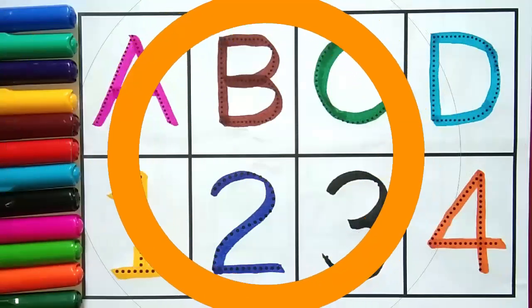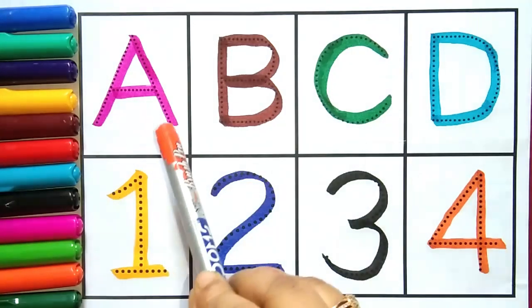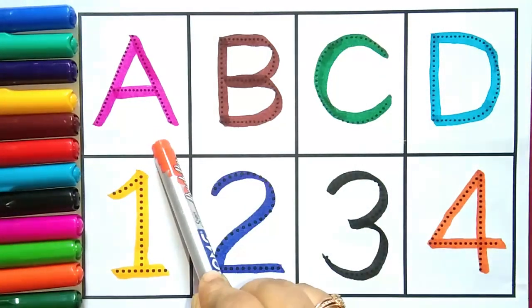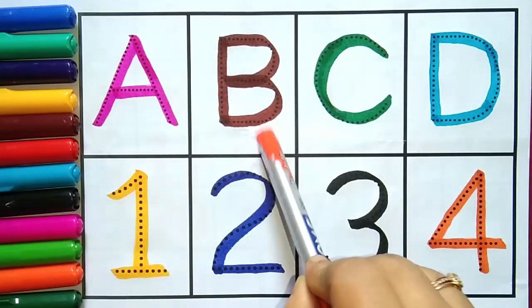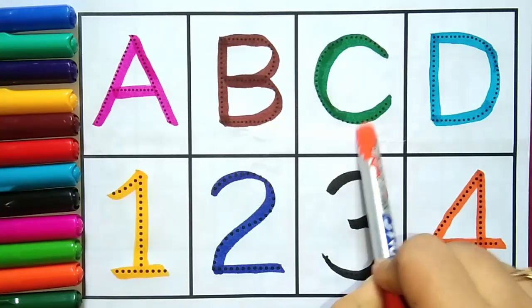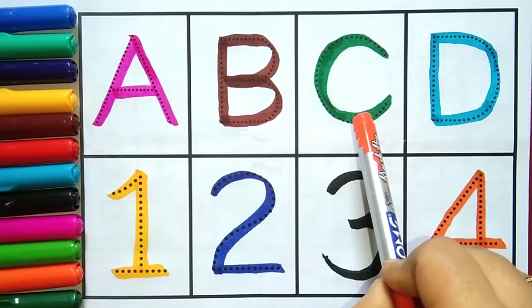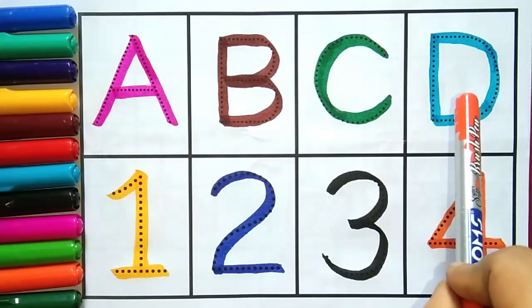A, A for Apple. B, B for Ball. C, C for Cow. D, D for Dear.